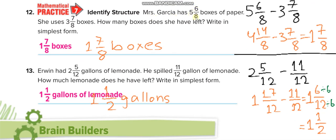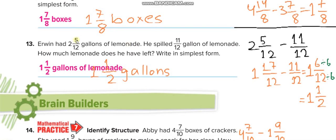Mrs. Gracia has 5 and 6 over 8 boxes of paper; she used 3 and 7 over 8 boxes. How many boxes does she have left? We cannot subtract 7 from 6, so we borrow: 5 becomes 4 whole, and 8 plus 6 equals 14 over 8. Minus the second fraction: 1 and 7 over 8. Similarly, for another problem we take 1 carry from 2, making it 1, and 12 plus 5 equals 17 over 12, minus 11 over 12.